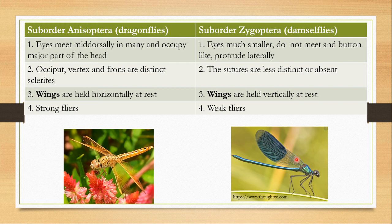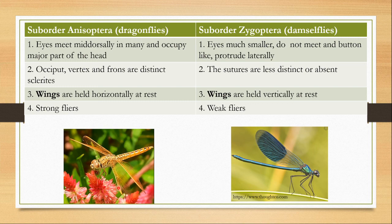Wings are held horizontally at rest in dragonflies, but held vertically at rest in damselflies. Dragonflies are very strong flyers — they can reach speeds of up to 100 kilometers per hour. Damselflies are not as capable; their flying is more awkward with lower speed.